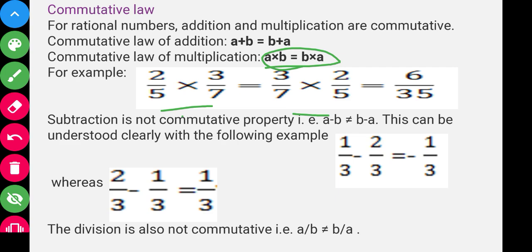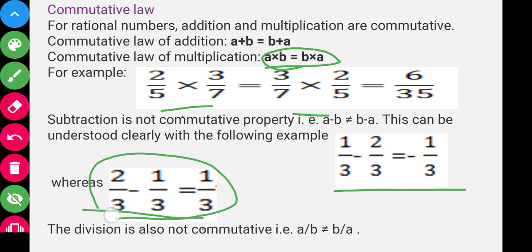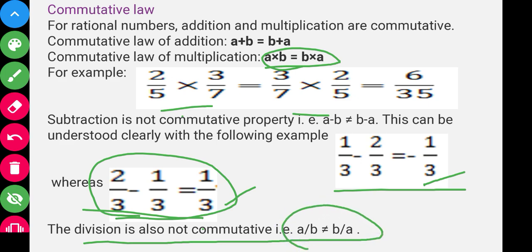In the case of subtraction, it is not commutative. For example, 1/3 - 2/3 = -1/3, but 2/3 - 1/3 = 1/3. Since -1/3 ≠ 1/3, commutative property does not hold for subtraction. Similarly, division is also not commutative.